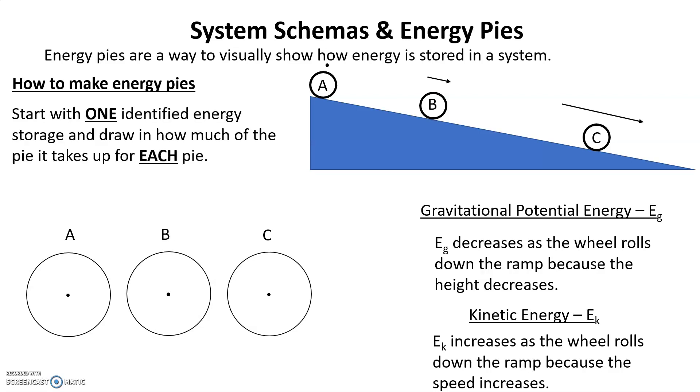Now we start with one of the identified energy storages and draw in how much of the pie it takes up for each pie. Let's pick EG. At the very top, it has a lot of height but doesn't have any speed. Notice in B, there's an arrow above B because it's moving. In C, the arrow is much longer because it's much faster. But above A, there isn't an arrow, just a dot, because it's not moving. So that means all the energy storage at A is all EG.